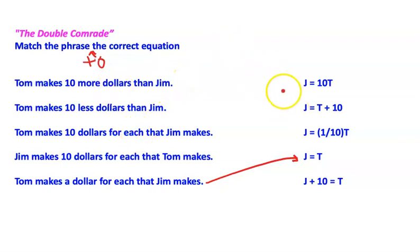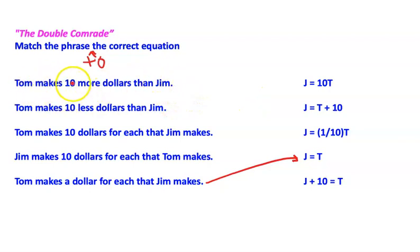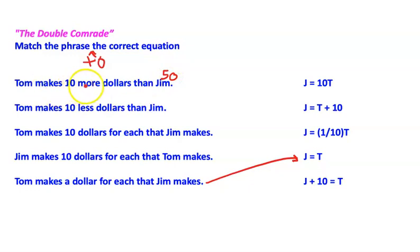Sometimes just reading the words to match the equations can get tricky, but if you throw in some numbers, they can help decode what's going on. So let's try: Tom makes ten more dollars than Jim. Let's say Jim makes fifty dollars — then Tom makes ten more, so Tom would make sixty dollars.